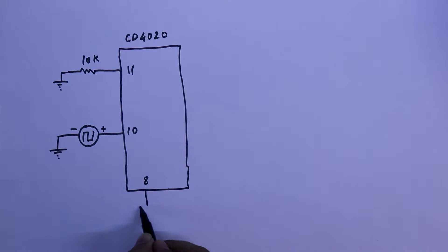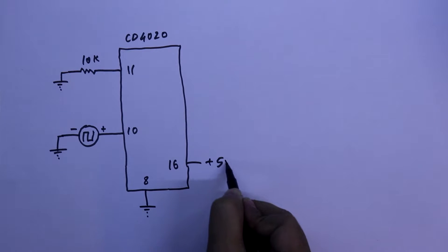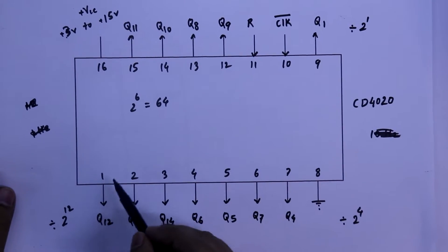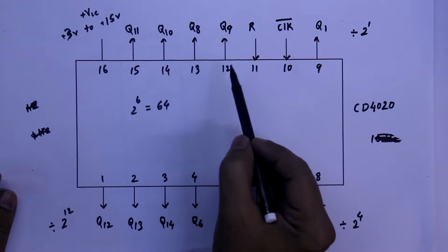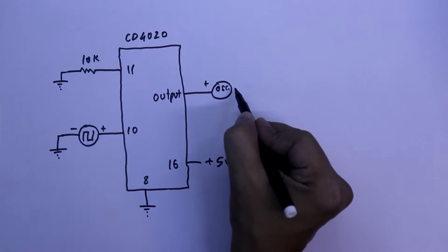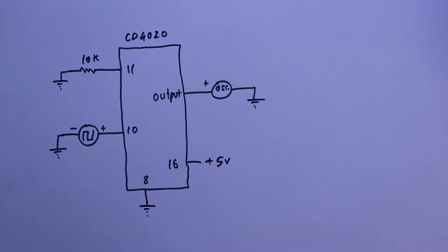Pin number 8 is connected to the ground. And we will connect pin number 16 to plus 5 volt. And we will check the output. That is the pin, pin 1 to 7, then 12 to 15. The positive pin of oscilloscope will be connected to this. And negative will be connected to the common ground. So this will be our connection.